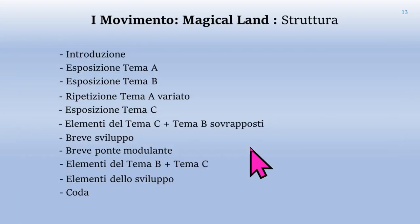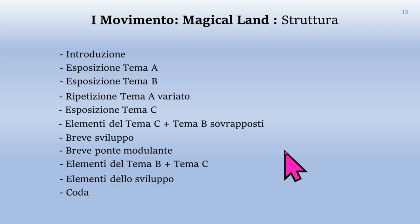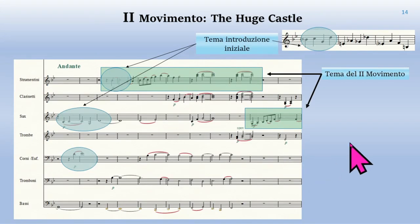Nella diapositiva successiva viene descritta a grandi linee la struttura del movimento: ci sono le esposizioni dei temi A e B, le loro variazioni, il tema C, il ponte modulante, poi ancora le esposizioni dei temi A e B, lo sviluppo e la coda. Questo porta, senza soluzione di continuità e senza spezzare la musica, all'introduzione del secondo movimento, Dei Huge Castle.